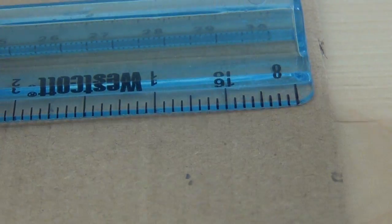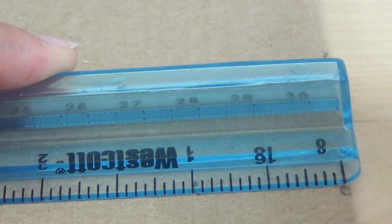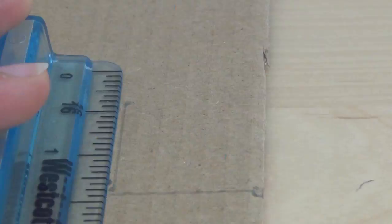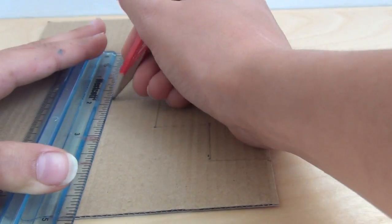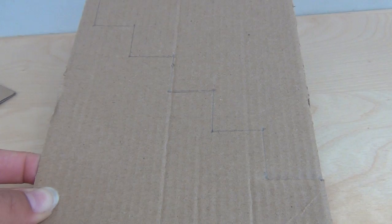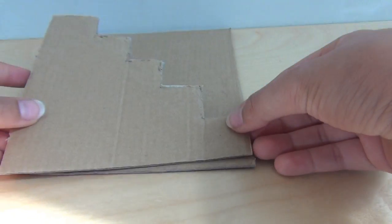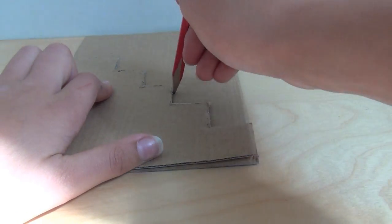Now, connect the dots. Now, cut out your shape. Once you cut out your shape, place it onto your other piece and trace the shape.